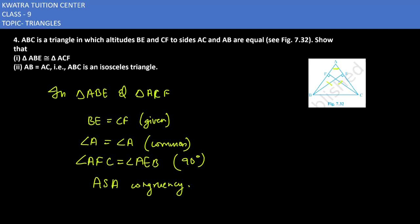Now we have to prove the second part. AB and AC are the sides of the triangles ABE and ACF. So what I can write is AB is equal to AC by CPCT. So yes, this is your answer for question number 4.